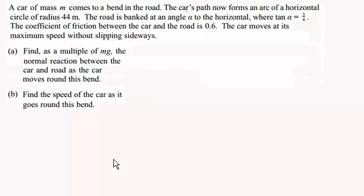So first of all, we need to draw a sketch, and when I'm drawing cars going round bends, I tend to draw a side view, something like this, where we've got the inclined road to the horizontal here, and in this example, the angle it makes with the horizontal is alpha.